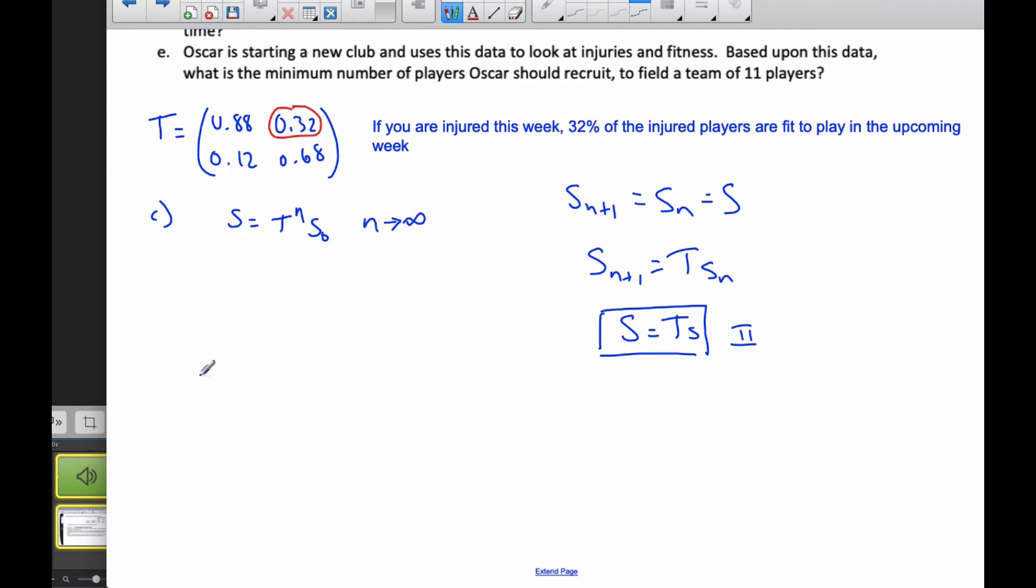So if I take my transition matrix, 0.88, 0.12, 0.32, and 0.68, and I multiply it by S. I don't know what S is, so let's call S equal to A, B. So if I multiply T times S, I have to get S back again.